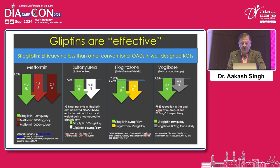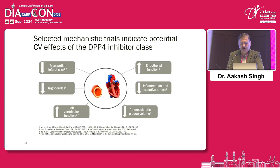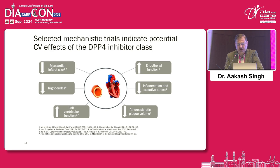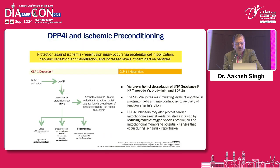GLP-1 receptor agonists are also effective. They have good glycemic control, and glycemic control improves as HbA1c moves towards the target of 7. Coming to the CV benefits of GLP-1, they decrease myocardial infarct size, decrease triglyceride levels, increase left ventricular function, increase endothelial function, decrease inflammation and oxidative stress, and decrease atherosclerotic plaque volume. DPP-4 inhibitors and ischemic preconditioning in patients of MI have been shown in some studies to limit the infarct size.